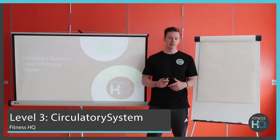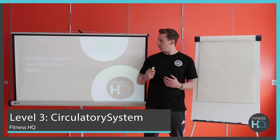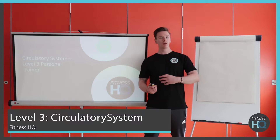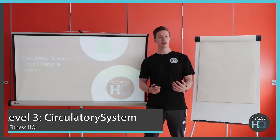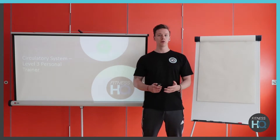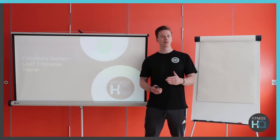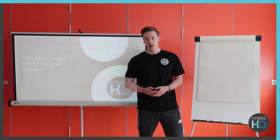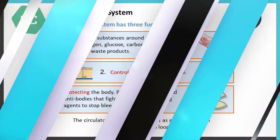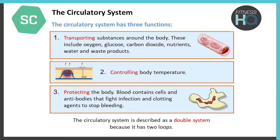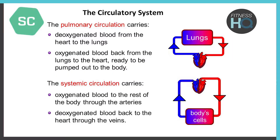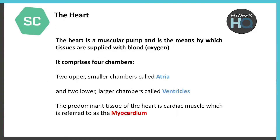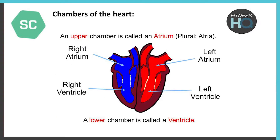Before we get started, I just want to remind you that there are a few topics that are going to come up in this that we've covered in level 2 already. I want to emphasise that you still need to know these, so don't feel like you're going to have to skip through these phases because they do come up in level 3 examples as well. We'll quickly go over the functions of the circulatory system, pulmonary and systemic circulation, and the structure of the heart and its chambers.